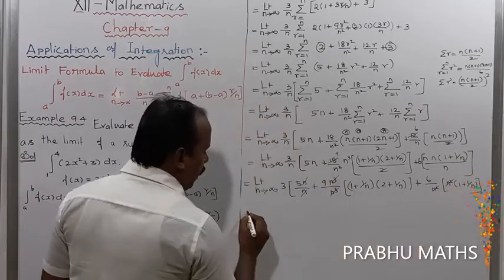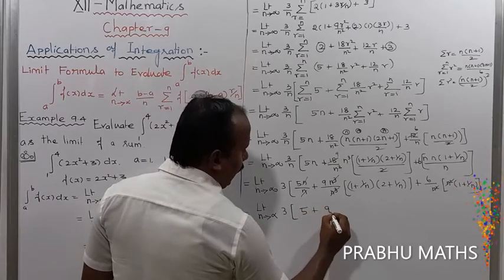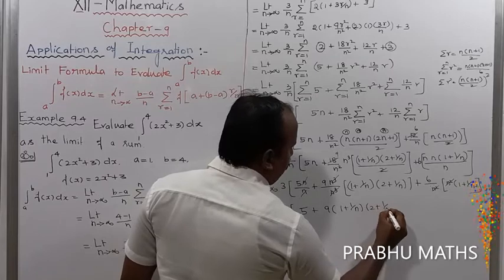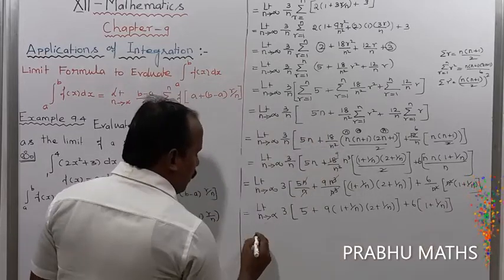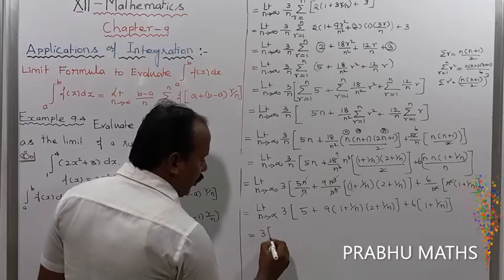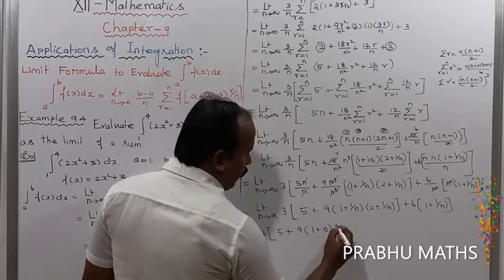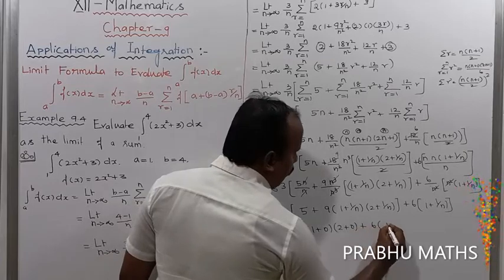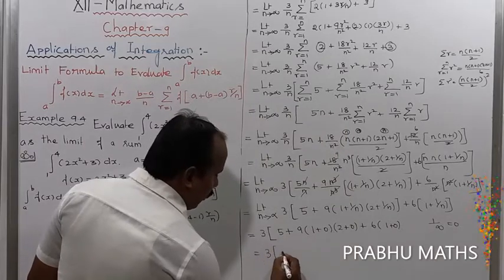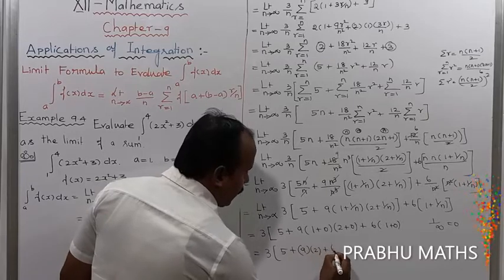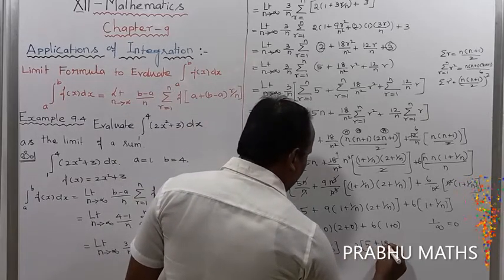Taking the limit as n tends to infinity, 1/n tends to 0. So the expression equals 3 into [5 + 9·(1)·(2) + 6·(1)] = 3 into [5 + 18 + 6] = 3 into 29.